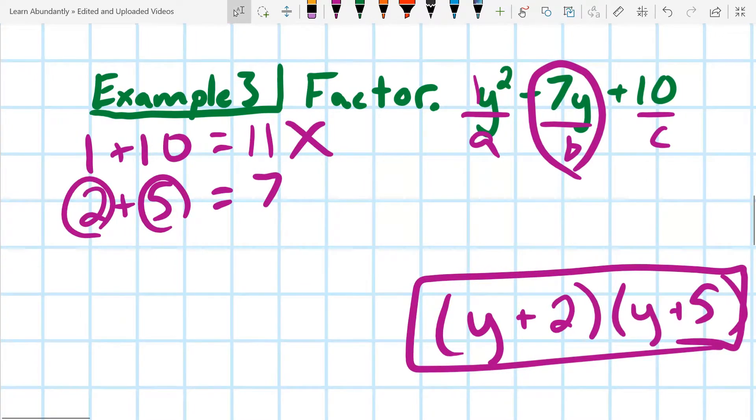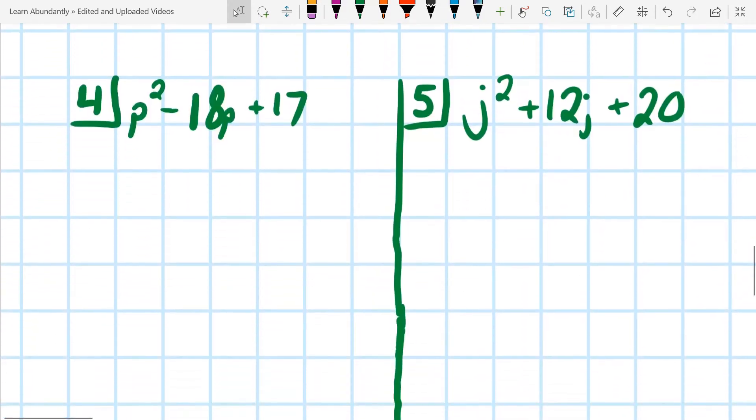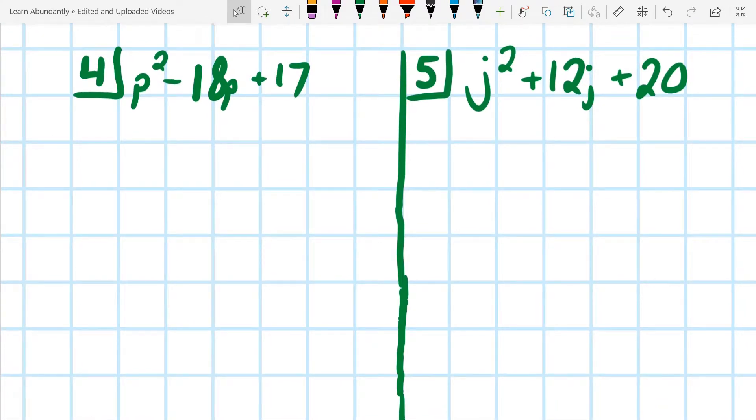Now, surely you say this must get a little bit more difficult because this seems a little silly at this point. So I'm going to throw a couple ones at you. Number 4, first thing you should notice is that we have a negative. It says minus 18p. Okay, so that's important.